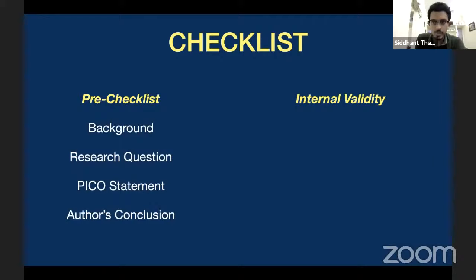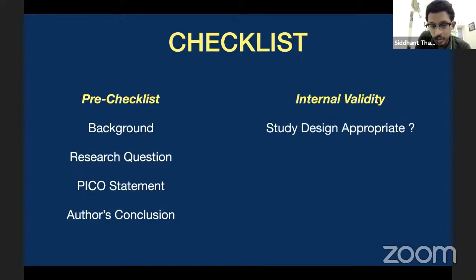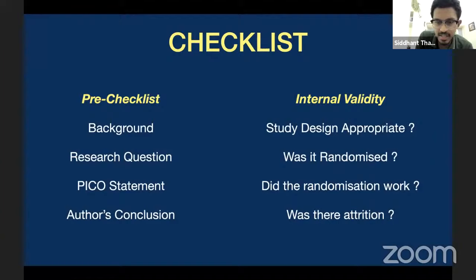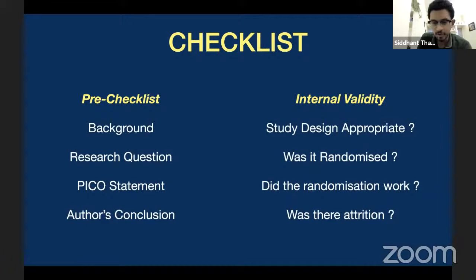You have a pre-checklist, internal validity, results, and external validity. Internal validity will come under the following headings: whether the study design for the question was appropriate, whether it was randomized, whether the randomization worked, and what about the follow-up. You need to know whether the design was appropriate, what was the mode of randomization, did the randomization work, what was the follow-up, and about attrition.